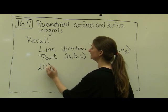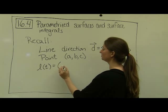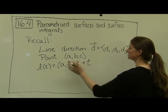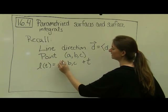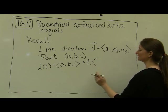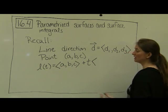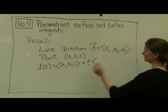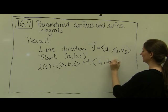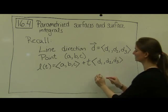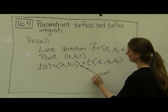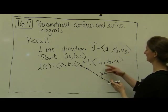Typically we write this as l of t, which equals — just like point-slope form — the point (a, b, c) plus t times the direction vector (d1, d2, d3). We should represent these as vector outputs. So we have our initial position (a, b, c) — essentially our value when t equals 0 — plus our direction vector (d1, d2, d3) multiplied by t. That means we start at our point and stretch or shrink in direction d.